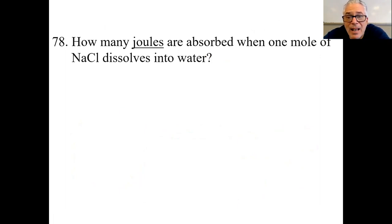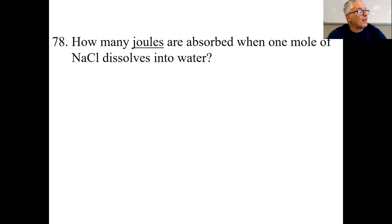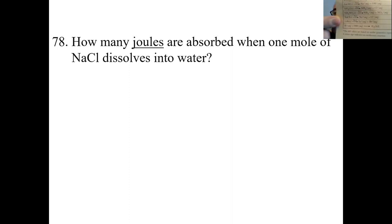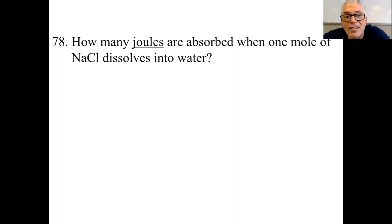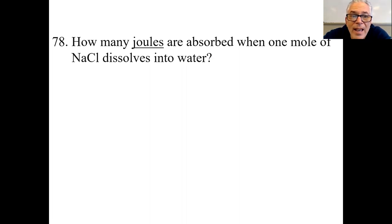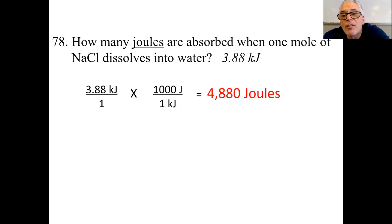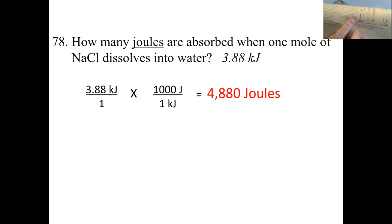How many joules are absorbed when one mole of sodium chloride dissolves in water? You're probably saying: I have no idea how to do this. Right near the bottom of Table I, sodium chloride goes into water and forms sodium and chlorine ions — it ionizes in water. Table I tells us that when one mole of sodium chloride goes into water, it absorbs 3.88 kilojoules. That's right there. But the question says joules, so you have to convert kilojoules to joules.